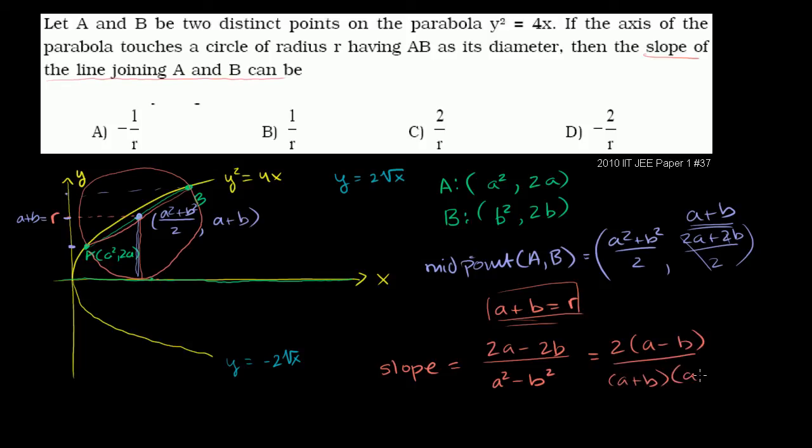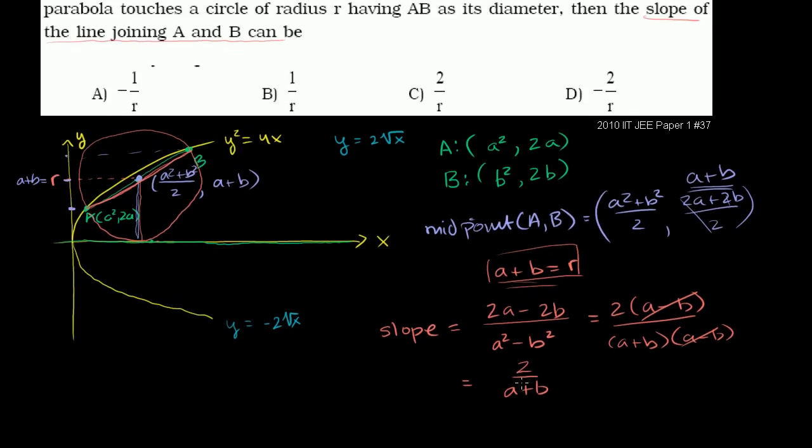This equals 2 times a minus b over a plus b times a minus b. This is just a difference of squares. The a minus b's cancel out. The slope of the diameter is 2 over a plus b. But we just figured out the y-coordinate of the midpoint, which was a plus b, that is equal to r.